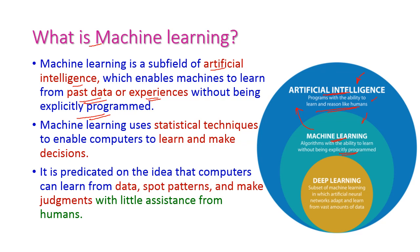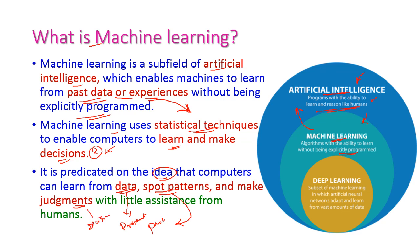The machine learns from past data or experience without being explicitly programmed. Machine learning uses statistical techniques — how the data is used for learning. By using statistical techniques the computer tries to learn and make decisions. It is predicted on the idea that the computer can learn from present or past data, spot patterns, and make judgments — that is, decisions — with a little assistance from humans.